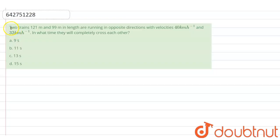The question says there are two trains. One has a length of 121 meters, the second is 99 meters, and they both are running in opposite directions. One has velocity 40 kilometers per hour and the other one has velocity of 32 kilometers per hour. In what time do they completely cross each other?